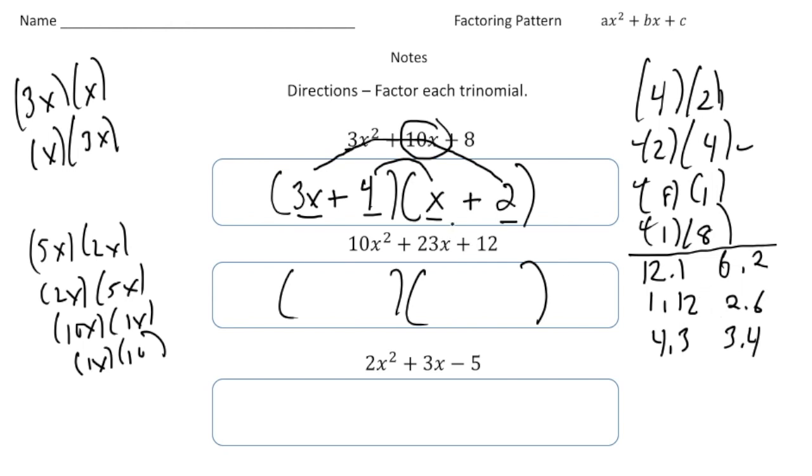But believe it or not, with practice, you'll kind of identify which ones make sense, believe it or not. But let's just plug in, let's give it a shot here. Let's plug in, say, a 5x and a 2x. So say we have 5x and a 2x. So I know 5x times 2x is going to give us the 10x squared. But now we need to get the values to get the 12.